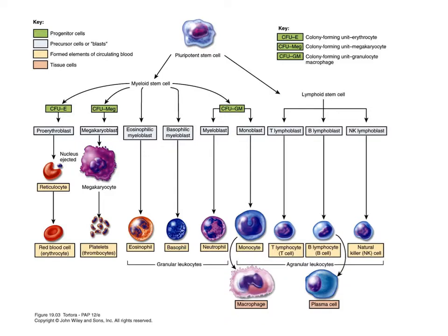This figure is a really nice depiction of the differentiation of the pluripotent stem cell. The pluripotent stem cell can differentiate into either the myeloid stem cell or the lymphoid stem cell. The myeloid stem cell can then differentiate into a proerythroblast, which will become a red blood cell, a megakaryoblast, which will become platelets, and then precursors for eosinophil, basophil, neutrophils, or monocytes. The lymphoid stem cell can differentiate into the T lymphocyte, the B lymphocyte, or a natural killer cell.